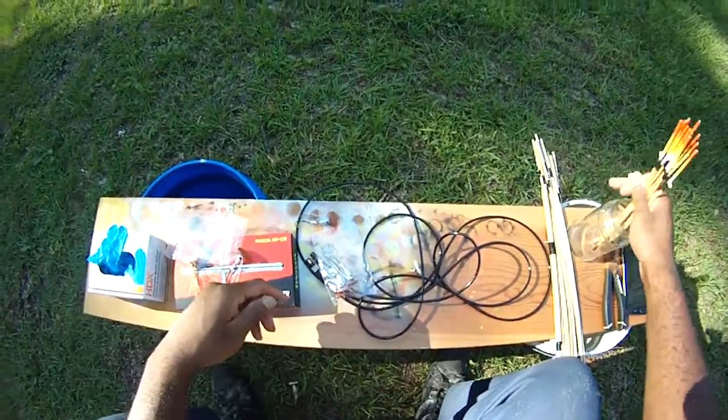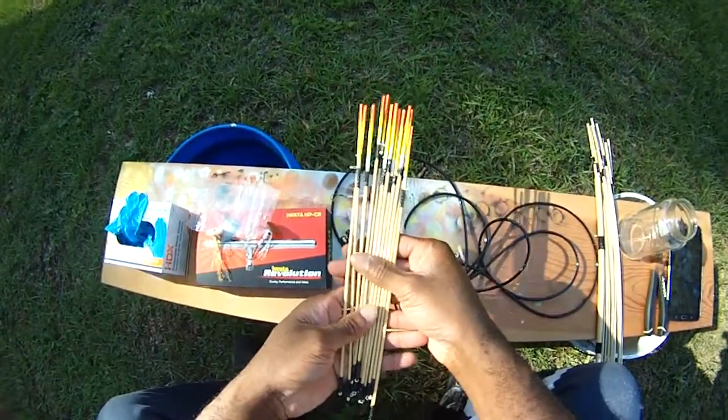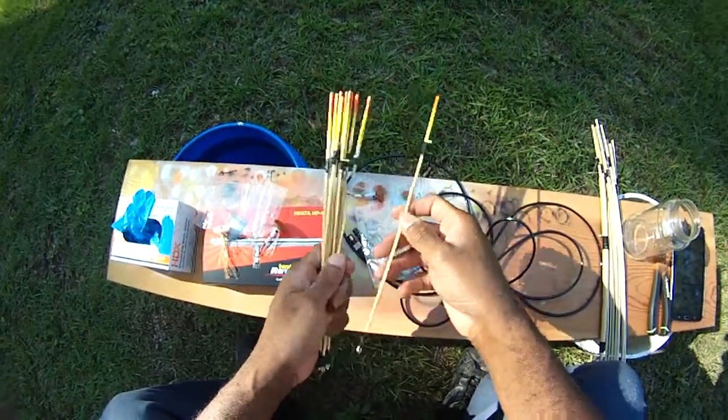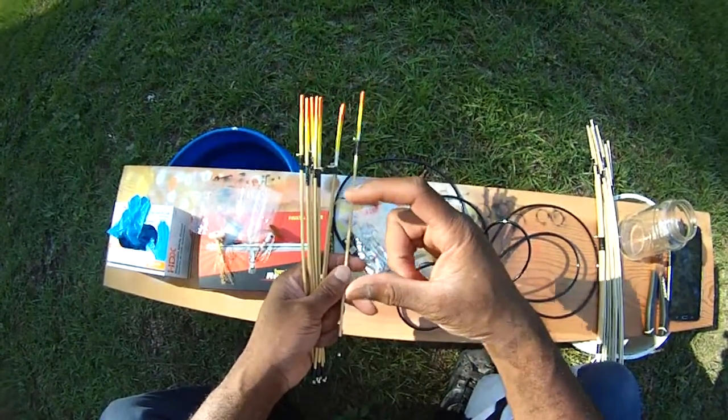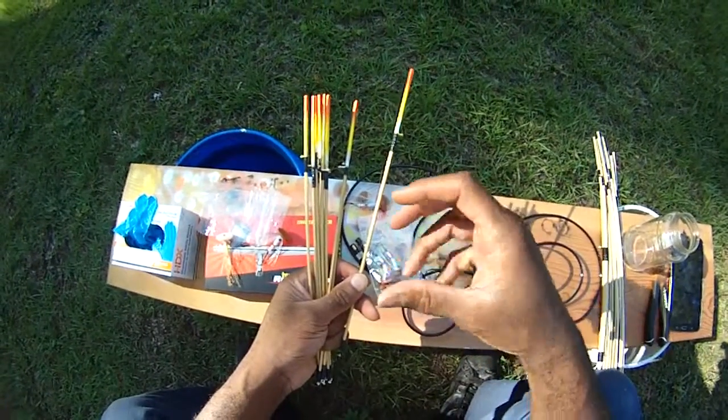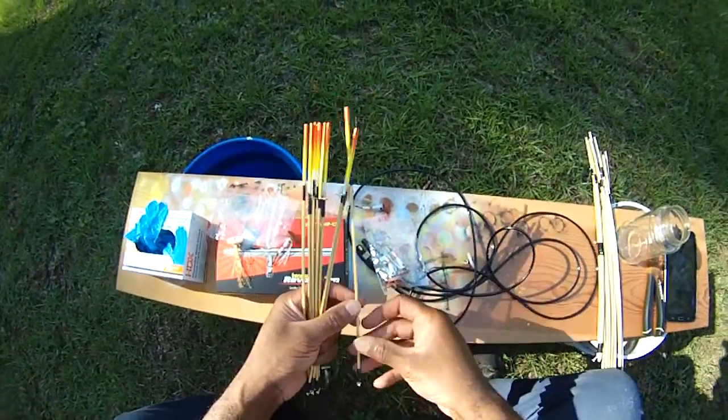I also make tackle. These are some bobbers that I use, and it's what I call the brim bobber. I found that in brim fishing, a lot of your big floats, the brim take it and they feel that resistance and they just get rid of it.